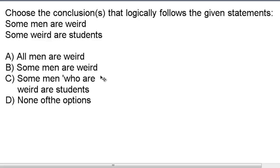The conclusions given are: Conclusion A — all men are weird; Conclusion B — some men are weird; Conclusion C — some men who are weird are students; Conclusion D — none of the options above.